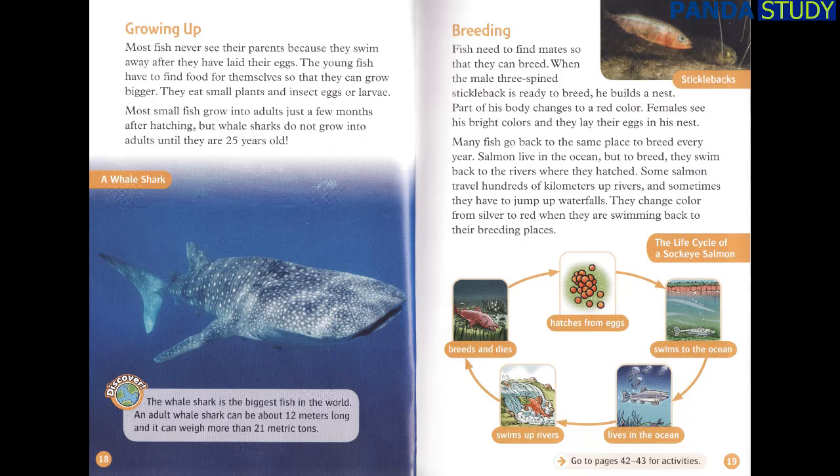Breeding. Fish need to find mates so that they can breed. When the male three-spine stickleback is ready to breed, he builds a nest. Part of his body changes to a red colour. Females see his bright colours and they lay their eggs in his nest. Many fish go back to the same place to breed every year. Salmon live in the ocean, but to breed they swim back to the rivers where they hatched. Some salmon travel hundreds of kilometres up rivers and sometimes they have to jump up waterfalls. They change colour from silver to red when they are swimming back to their breeding places.